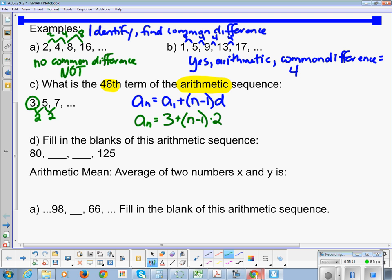So now if I want to find the 46th term, I would take 46 and plug it in for n. So the 46th term is 46 minus 1 is 45, times 2 is 90, plus 3 is 93. Boom, boom, boom. Answer the question, check.